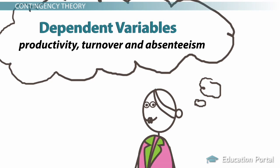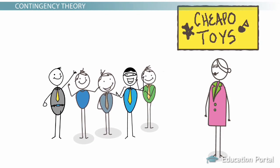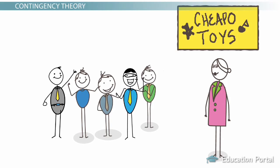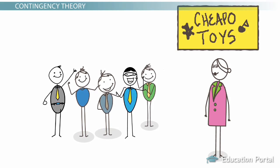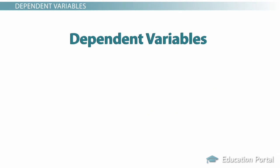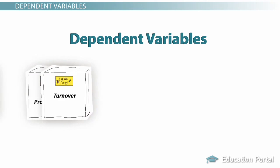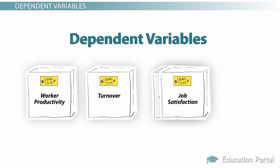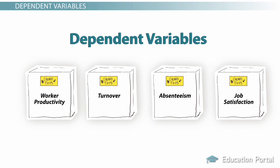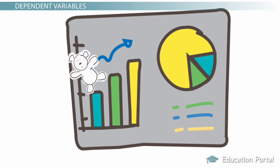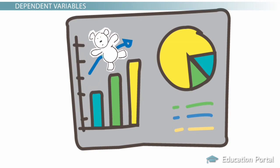Let's take a look at a real corporate example of how the contingency theory is significant to organizational behavior. Dependent variables are affected by independent variables. Cheapo Toys wants to know what can affect worker productivity, turnover, absenteeism, and job satisfaction. The company would like to find ways to make workers increase their daily production rate of toys.